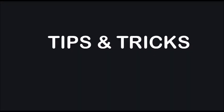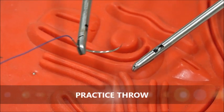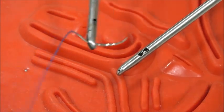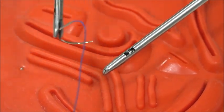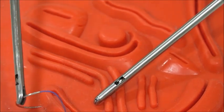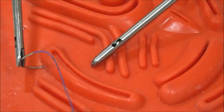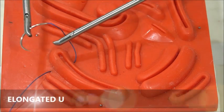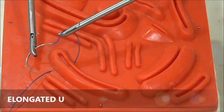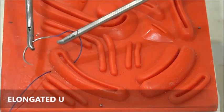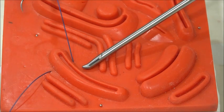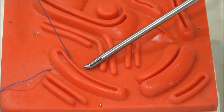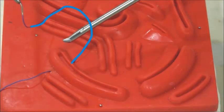Take home message or tips about laparoscopic suturing. First is, needle direction should be 90 degrees to the needle holder and 70 degrees to the tissues. See, the struggle is there in the figure—the very small C is formed. That's why the surgeon is struggling for the knotting. Take a full C—elongated U or elongated C—and the left instrument should be constant.